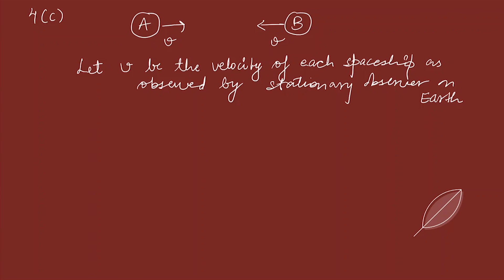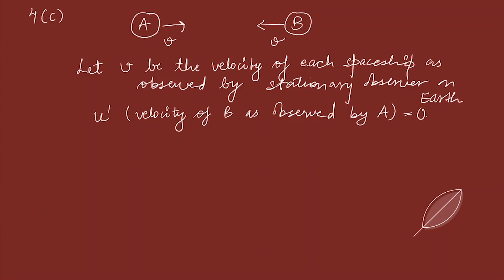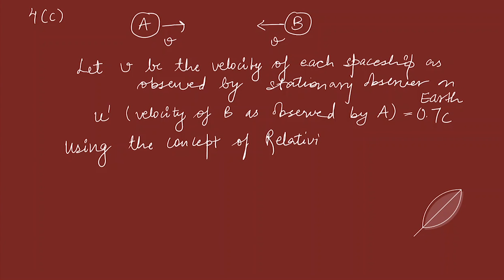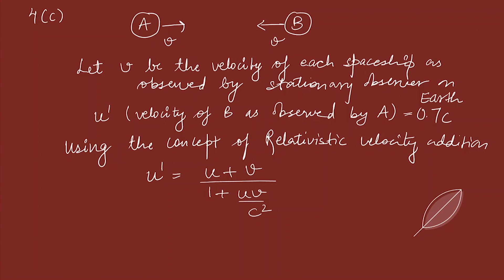Let v be the velocity of each spaceship as observed by the stationary observer. The relative velocity u′ — the velocity of spaceship B as observed by spaceship A — is 0.7c. Using the relativistic velocity addition formula with a positive sign since they approach each other: u′ = (v + v) / (1 + v²/c²) = 0.7c, giving 2v / (1 + v²/c²) = 0.7c.